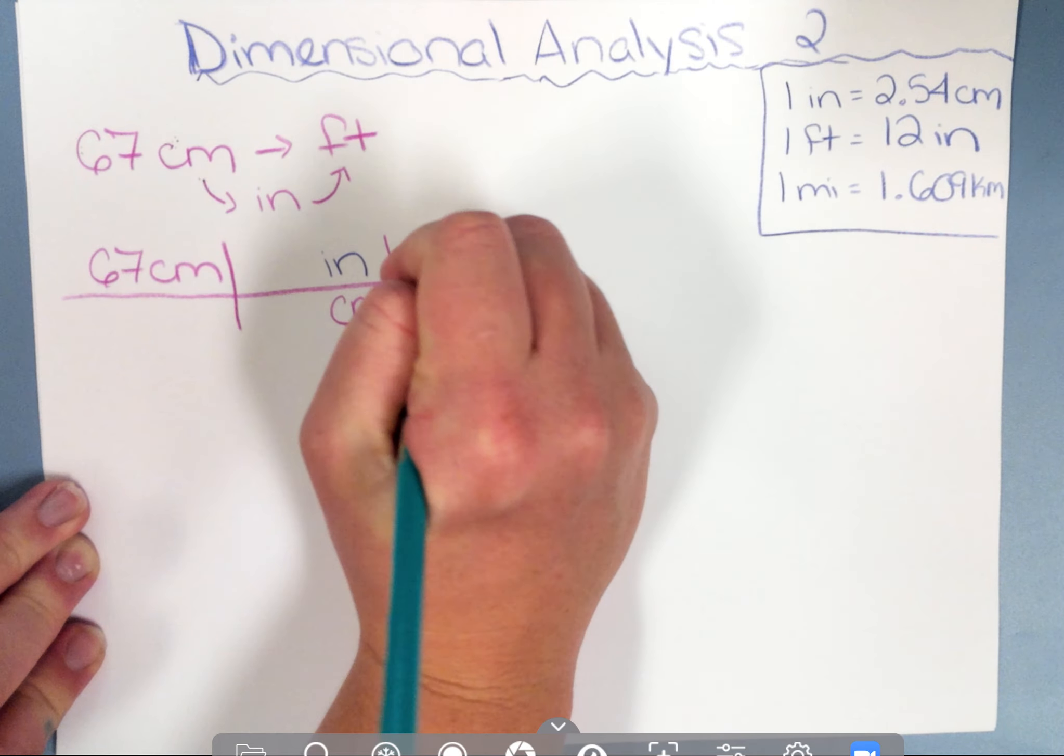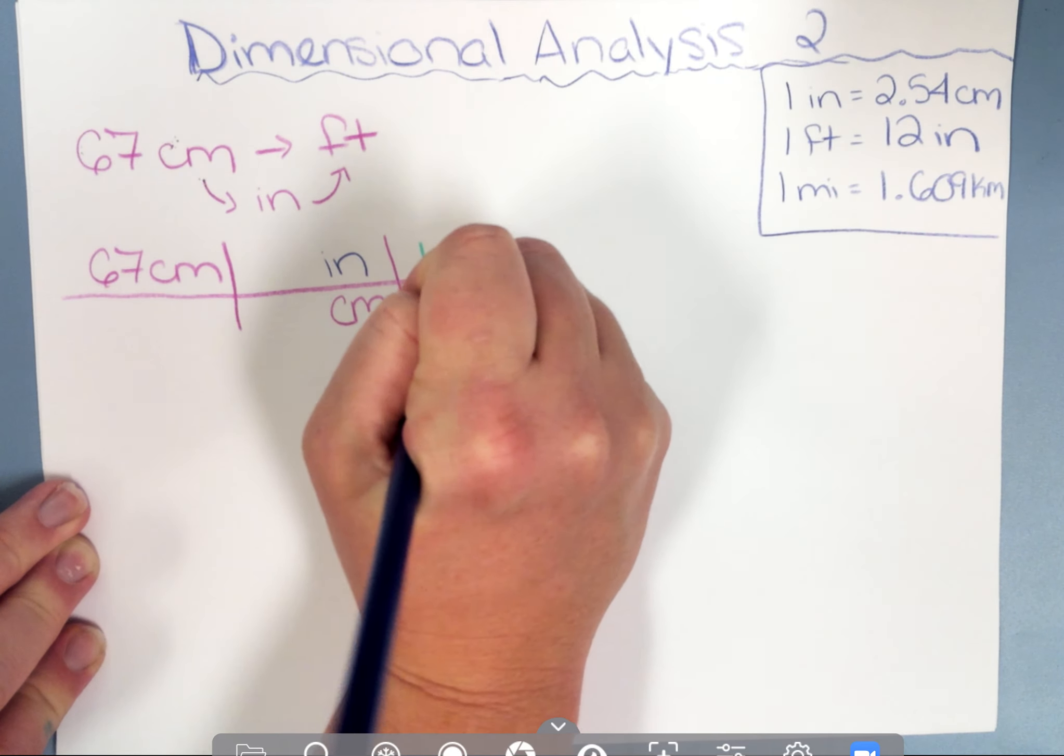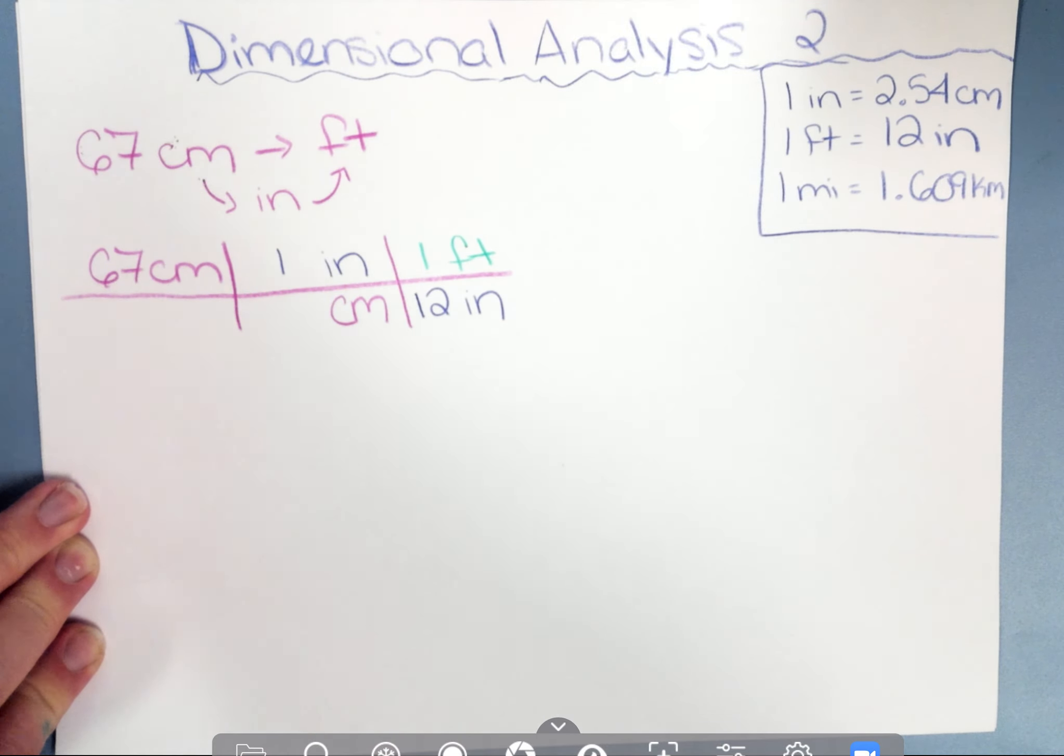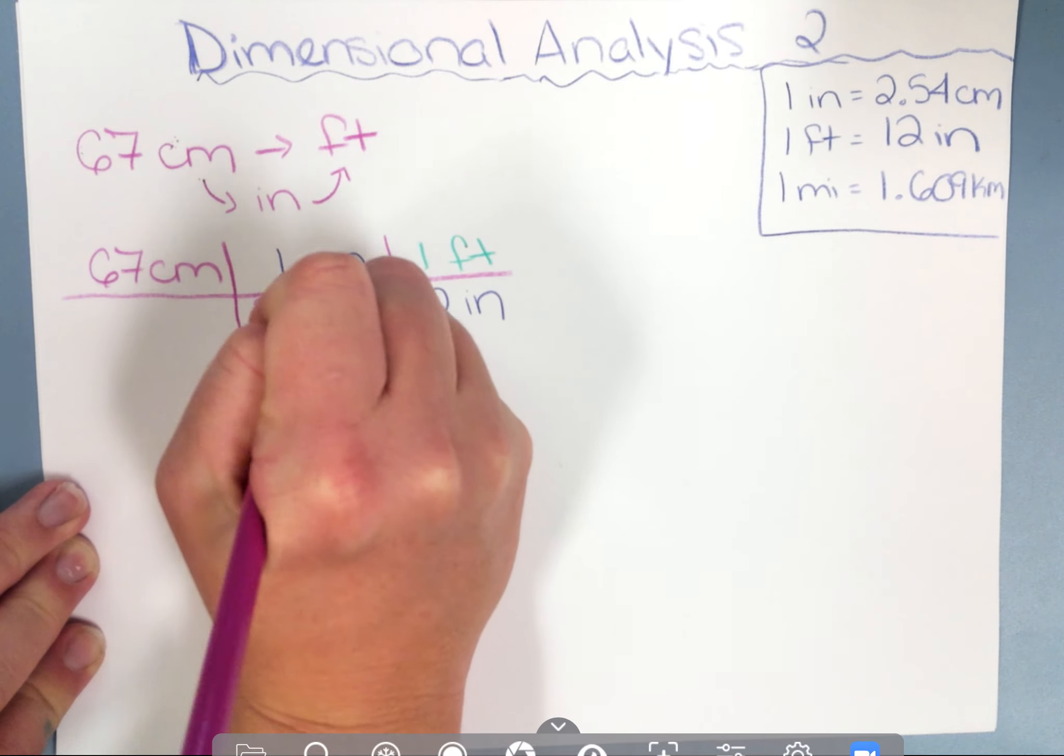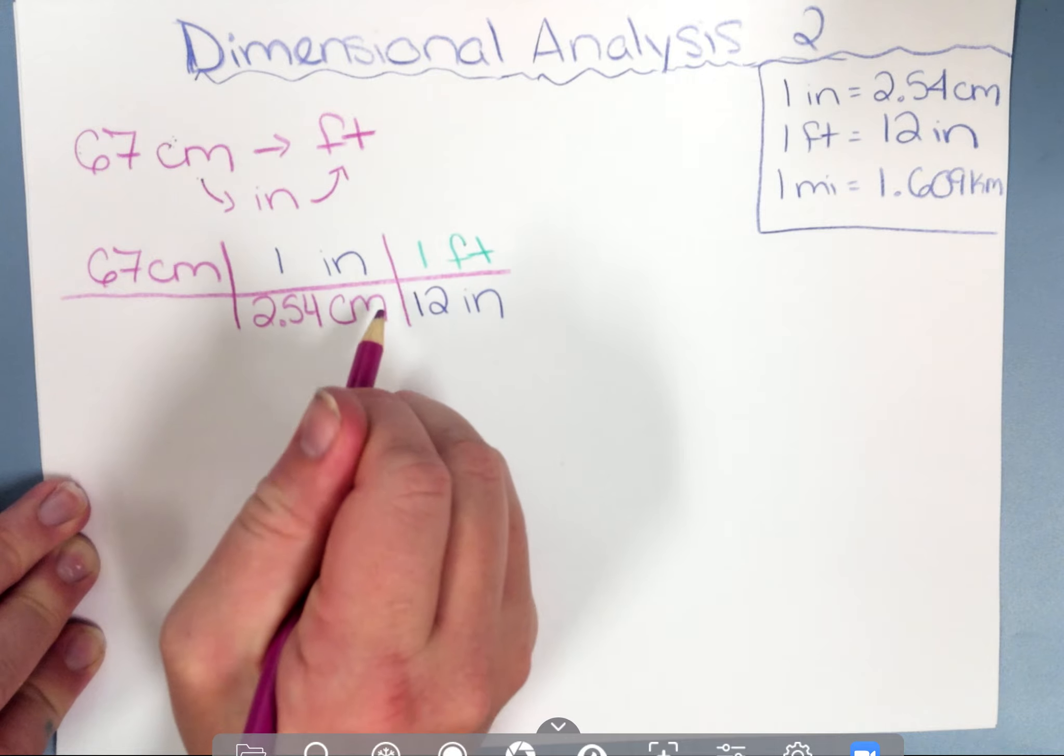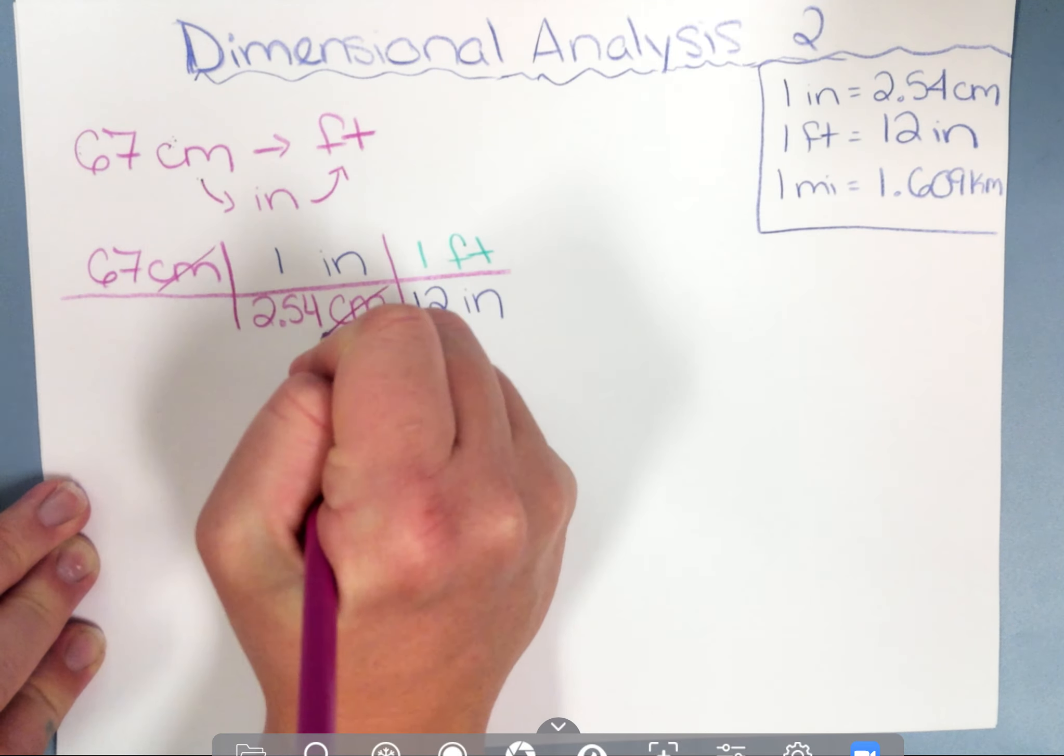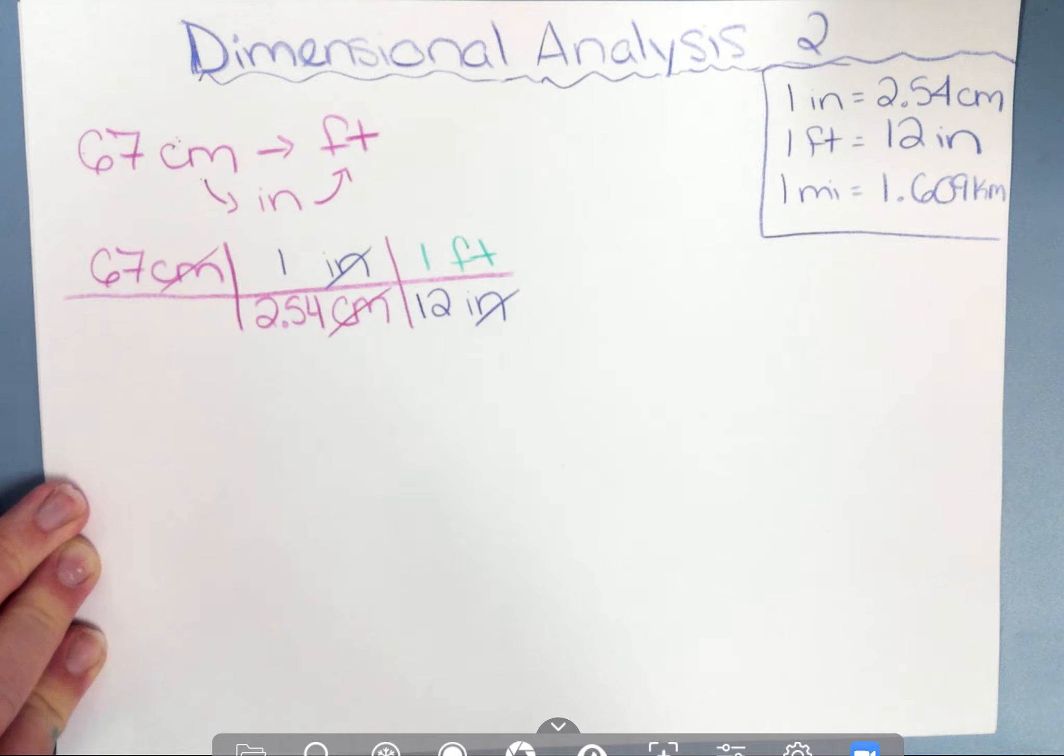I know in one foot I have 12 inches. And in one inch I have 2.54 centimeters. So if centimeters is on the top and centimeters is on the bottom, they're going to cancel. And then I have inches on the top and inches on the bottom, so these are going to cancel. And I'm left with feet, which is the unit I wanted.